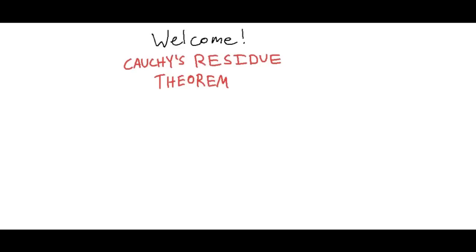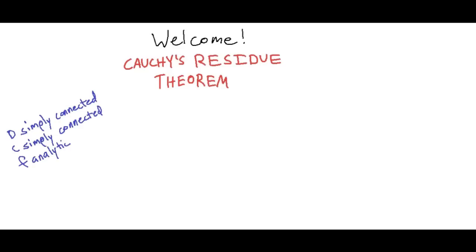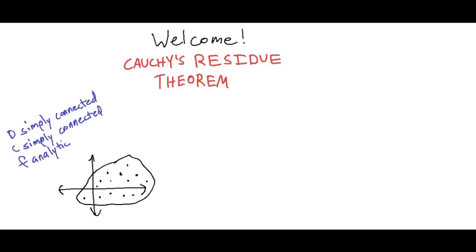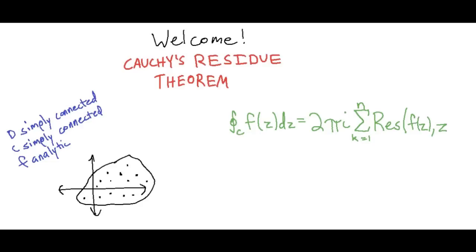Let me explain to you guys what this theorem says. We start with our usual suspects of assumptions. Our domain D is simply connected, C is closed and simply connected, and our function F is analytic across the region. We also want to make sure we have some singularities within our closed region — these are places where the function is undefined, usually because we'd be dividing by zero. These have to be isolated singularities; they can't be branch cuts. We can have one or many isolated singularities within our region. Finally, we can say that the integral of the function over this closed region is equal to 2πi times the sum of all of the residues of the singularities. That is Cauchy's Residue Theorem.